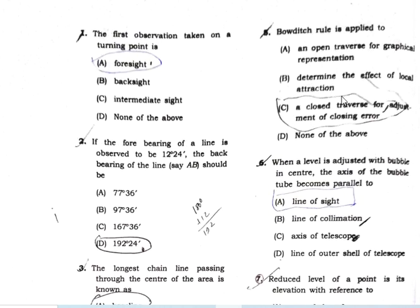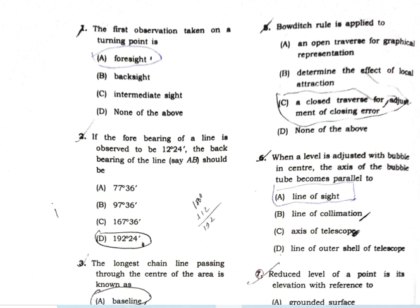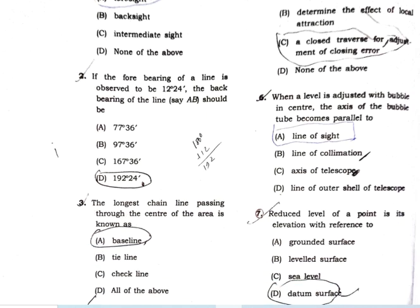Bowditch's rule is applied to a closed traverse for the adjustment of closing error. Question number six: when leveling is adjusted with the bubble in the center, the axis of the bubble tube becomes parallel to the line of sight.